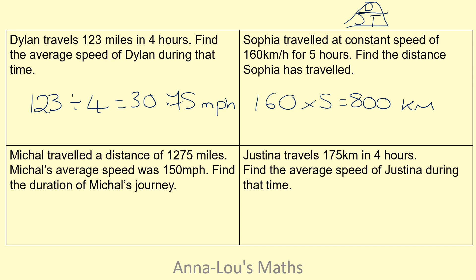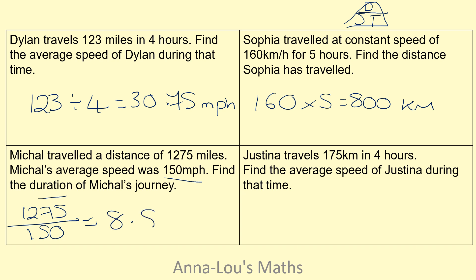Macal travels a distance of 1,275 miles and his average speed was 150 miles per hour. Functional skills questions are usually quite made up — 150 miles per hour means he's probably been stopped several times and lost his licence. But we're looking for duration, so time is distance divided by speed: 1,275 divided by 150 gives 8.5 hours.